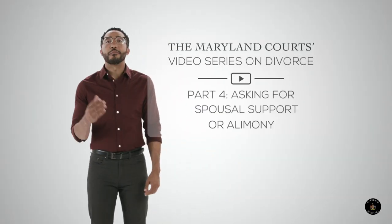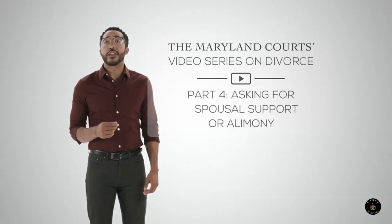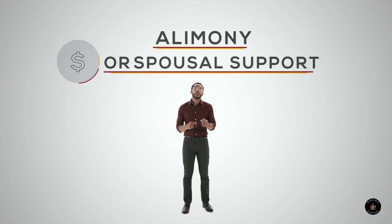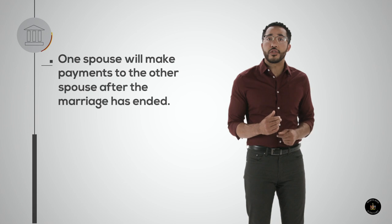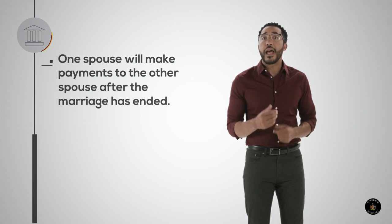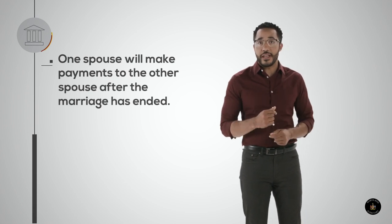Welcome to the Maryland Courts video series on divorce. In this nine-part series, you'll learn about the process used by the court to end a marriage. This video covers alimony or spousal support — the court process that will determine whether one spouse will make payments to the other spouse after the marriage has ended. The goal of these payments is to help the spouse receiving them to become self-supporting.